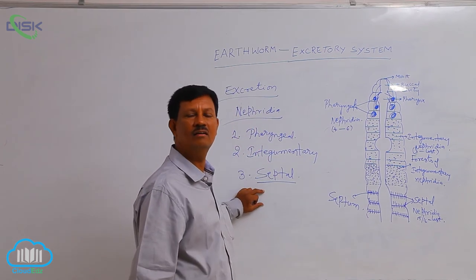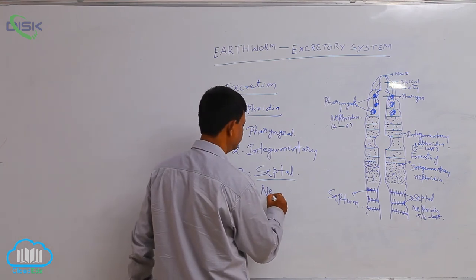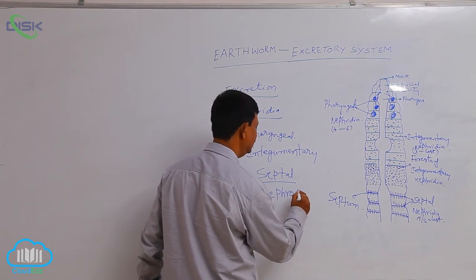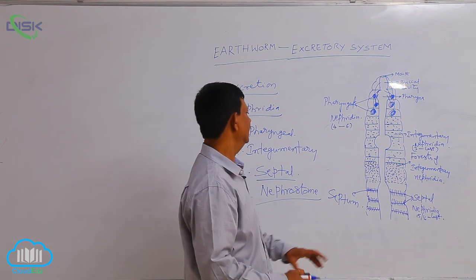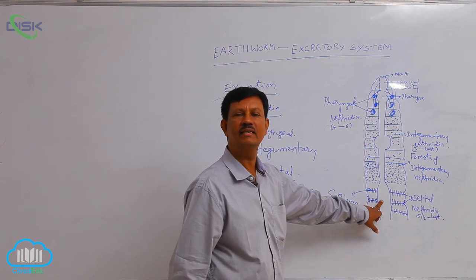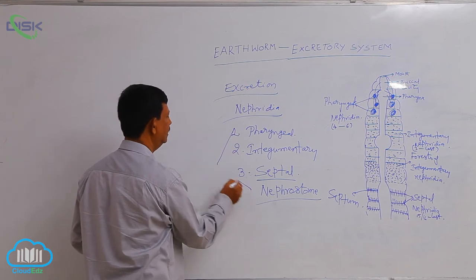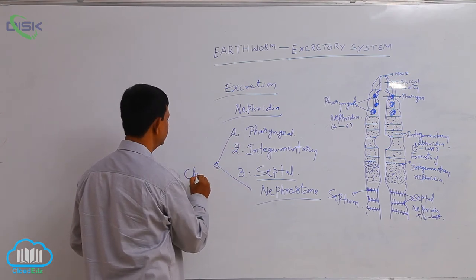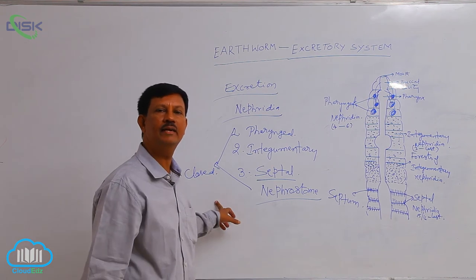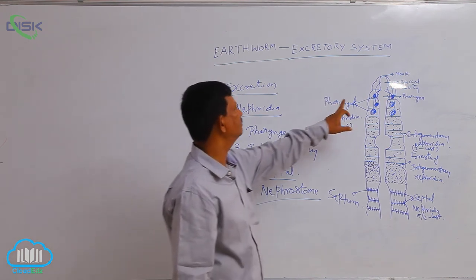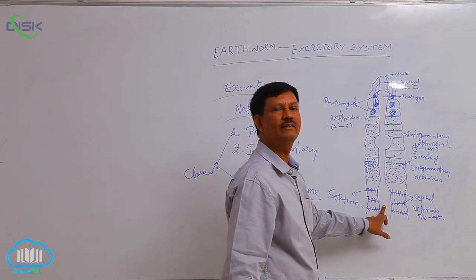When compared to other nephridia, septal nephridia are large in size. They also possess nephrostomes — a coiled structure present at the anterior region known as the nephrostome. These nephridia open into the alimentary canal, as do pharyngeal nephridia. Pharyngeal nephridia open into the pharynx region, and septal nephridia open into the intestine.